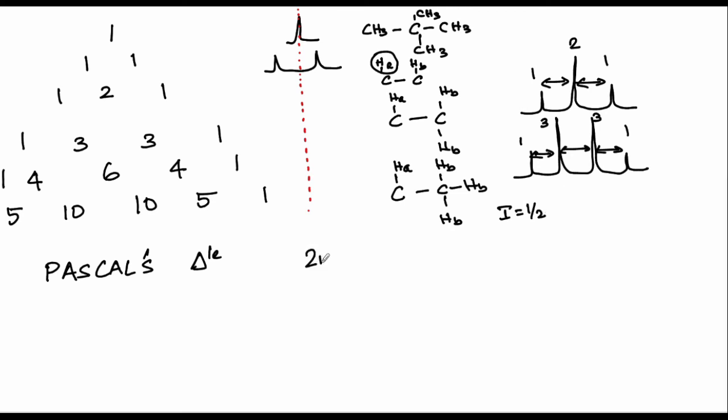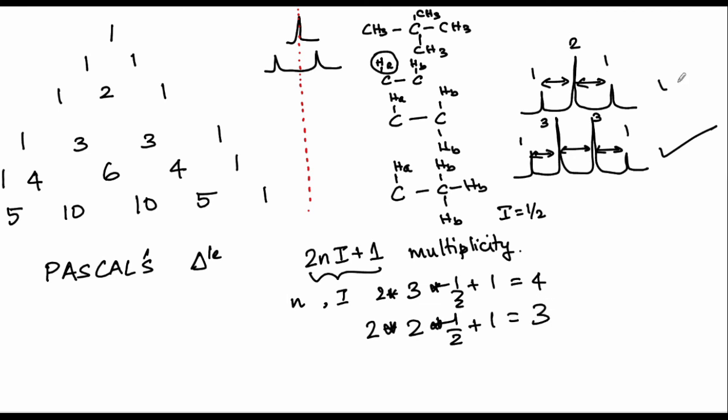So the general formula goes as 2NI plus 1 will be the multiplicity. Meaning, if you have a spin that is having n number of neighbors with spin quantum number of I then you end up getting a 2NI plus 1 multiplicity. Let us take for an instance and apply it for 3 protons that are present all of which are spin half. So you are going to have 2 times 3 times half plus 1 which will be 4 which is what you ended up getting as quartet. So similarly if you want to look at 2 spins that are coupled both of which are spin half, you are going to end up getting a triplet which is what you saw here.